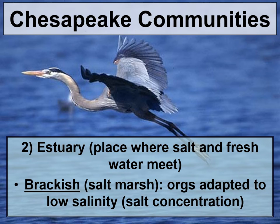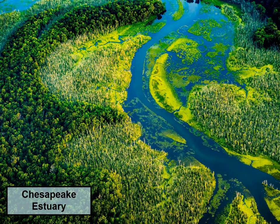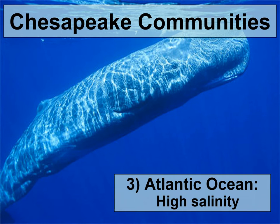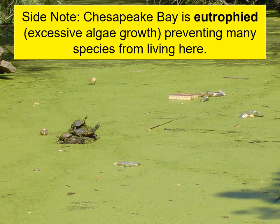A second community in this area is an estuary — places where salt and fresh water meet. The water there is termed brackish because it is a mixture of fresh and salt water, with low but notable salinity. The third system is where the river empties into the Atlantic Ocean, which has high salinity concentrations at about 3.5% salt. As a side note, some areas of the Chesapeake Bay are significantly eutrophied, meaning excessive algae growth occurs due to added nutrients, preventing many species from living there.